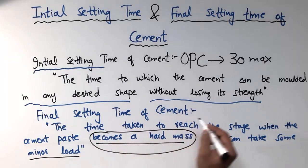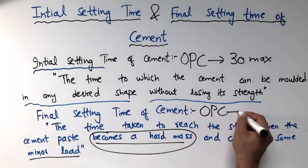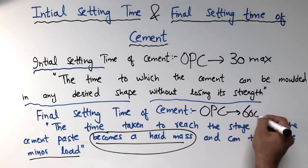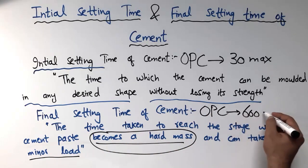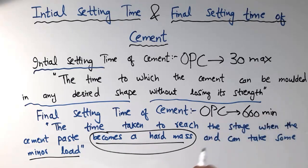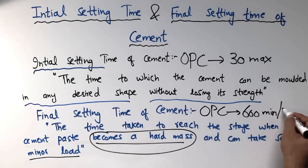The final setting time for ordinary Portland cement is generally a minimum of 600 minutes, which we can also say is 24 hours.